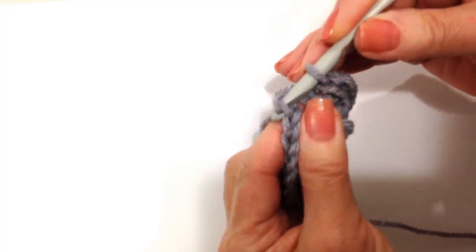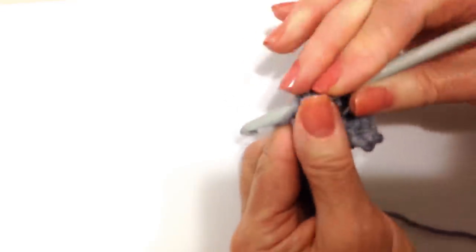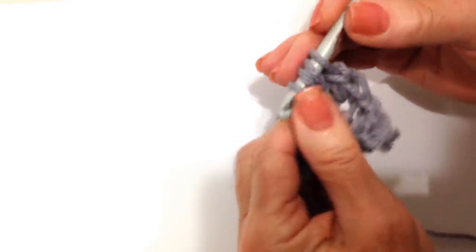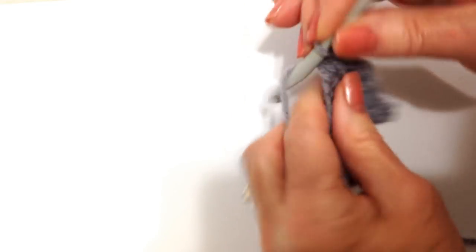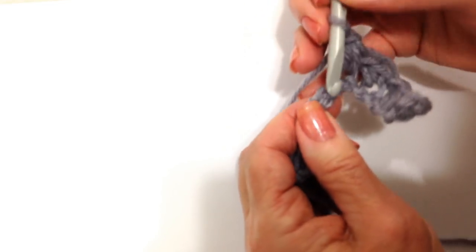Insert the hook through the stitch and pick up the yarn. Yarn over into the same stitch. Pull through four loops on the hook, pull through all four. Chain one, skip one. I'm going to continue across the row.